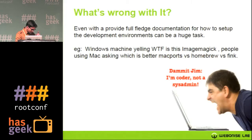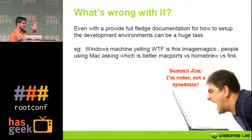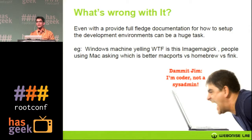What's wrong with this? Even if we provide full documentation for each operating system — Windows, Ubuntu, and Mac — not everybody is an expert about their operating system. We have to provide guidelines or steps they can follow. A lot of the time we end up with a Windows machine user asking 'what is ImageMagick?' I personally struggled to install ImageMagick on Windows. People using Mac ask which is better — MacPorts, Fink, or Homebrew. A lot of people come to you and say 'I'm a coder, not a DevOps or sysadmin, so you have to set this up for me.'